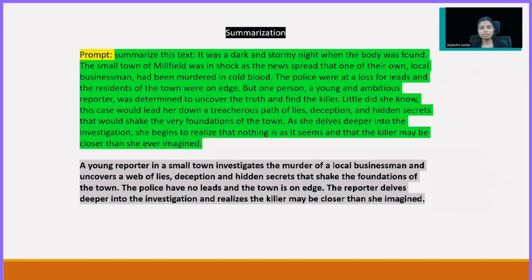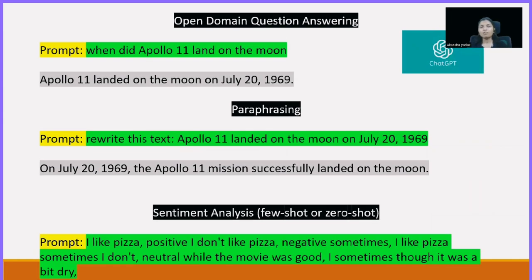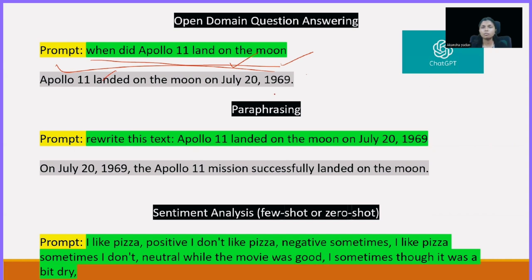The second example: suppose you want to summarize everything, so just write 'summarize this text' followed by the content you have and it will give you a summary. Suppose you have an open-domain question you want answered — for example, 'when did Apollo 11 land on the moon?' You can directly type it in question format and pass it to ChatGPT and it will give you the answer.